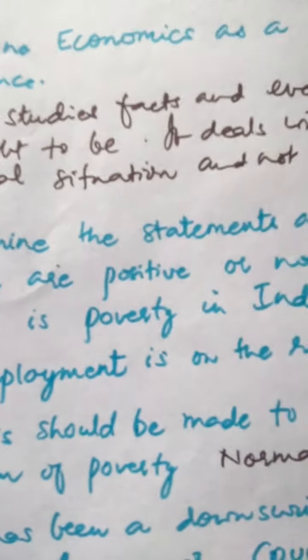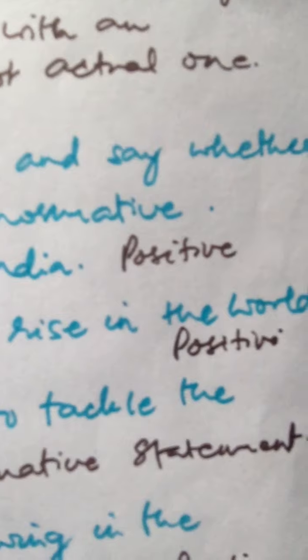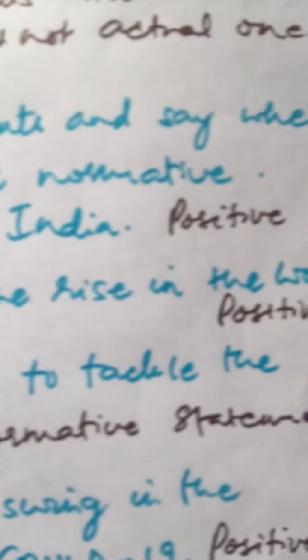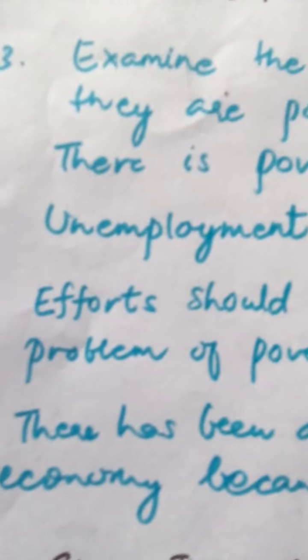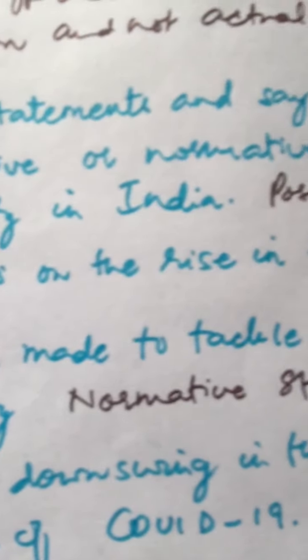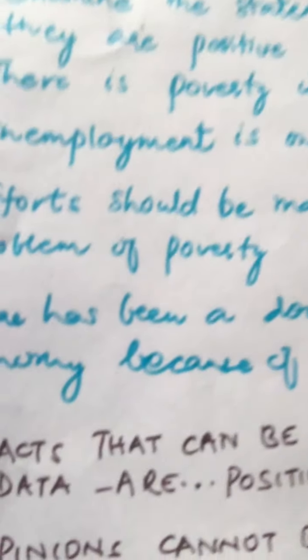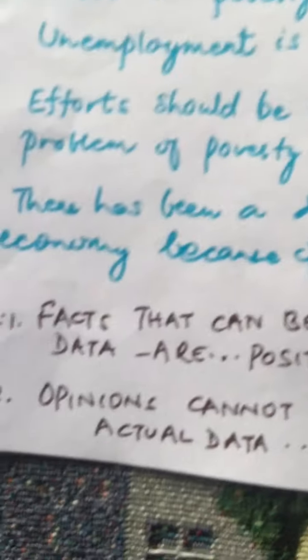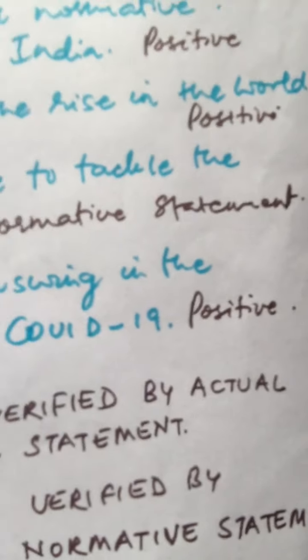We also had to examine statements and identify them as positive or normative. First: 'There is poverty in India' — it states a fact, so it is a positive statement. Second: 'Unemployment is on the rise in the world' — positive, because it states a fact. Third: 'Efforts should be made to tackle the problem of poverty' — normative statement. Fourth: 'There has been a downswing in the economy because of COVID-19' — again a fact, so it is a positive statement.